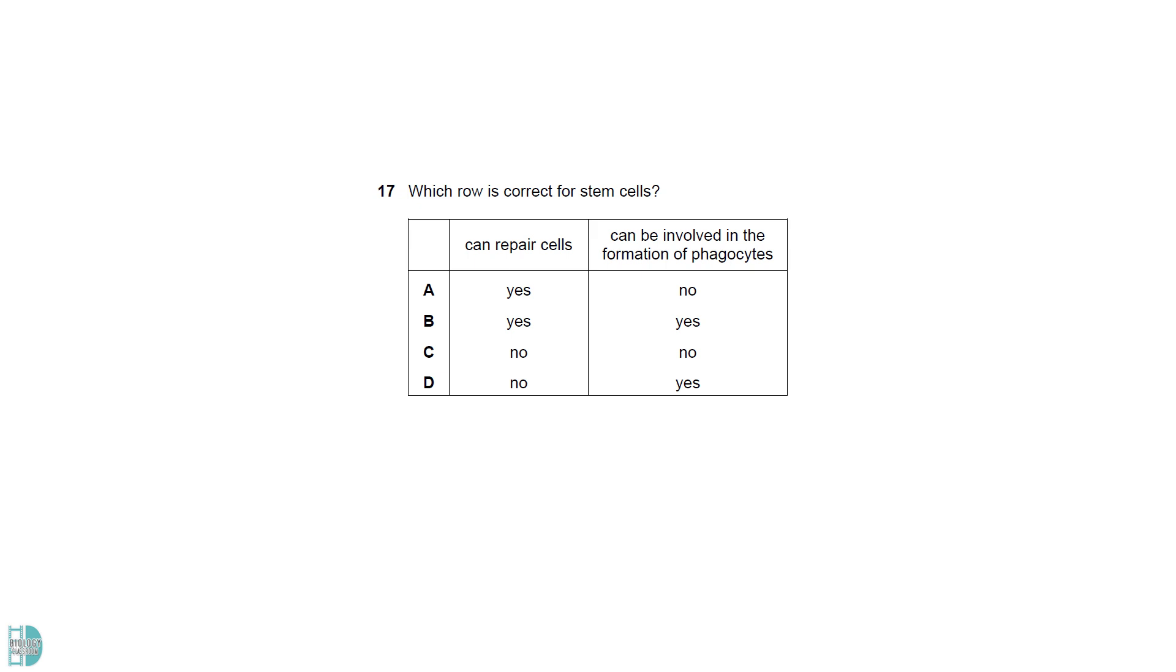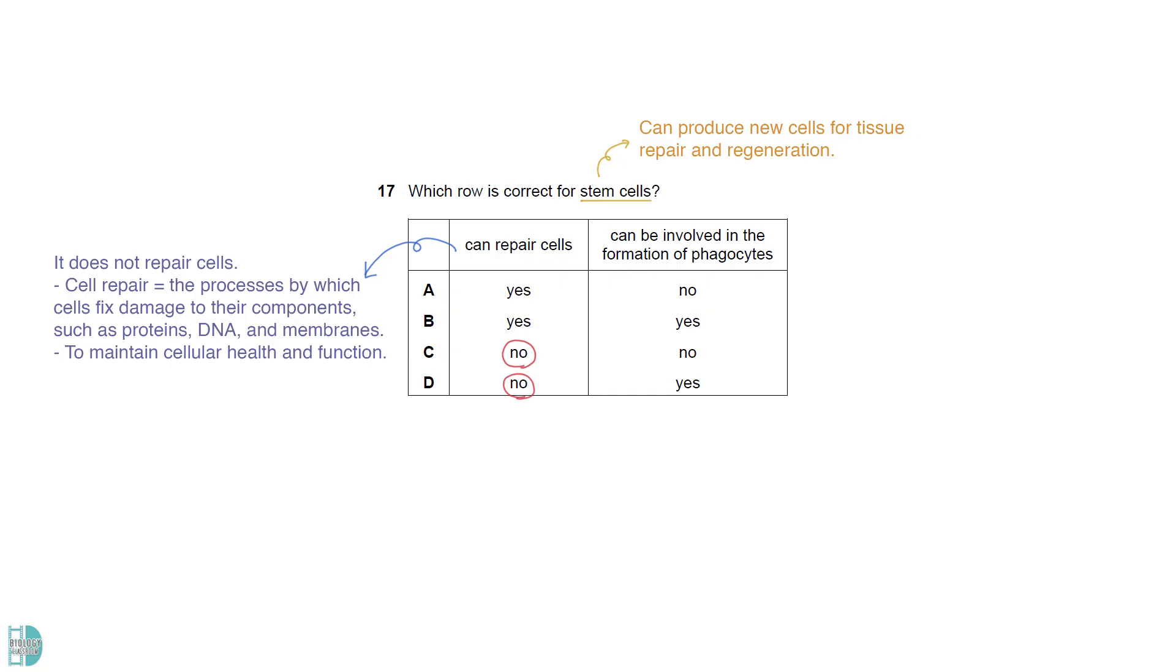Stem cells can produce new cells for tissue repair and regeneration. It does not repair cells. Cell repair refers to the processes by which cells fix damage to their components, such as proteins, DNA, and membranes, to maintain cellular health and function. Stem cells in the bone marrow can divide and specialize into various blood cells, including phagocytes.